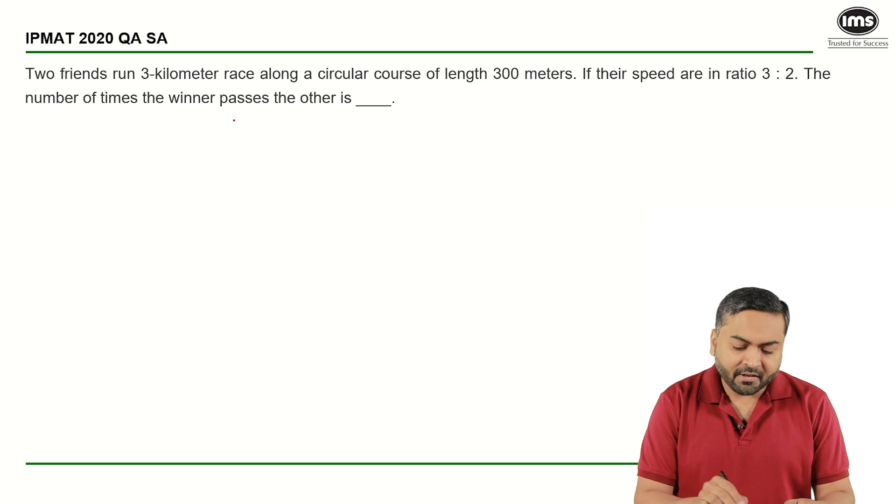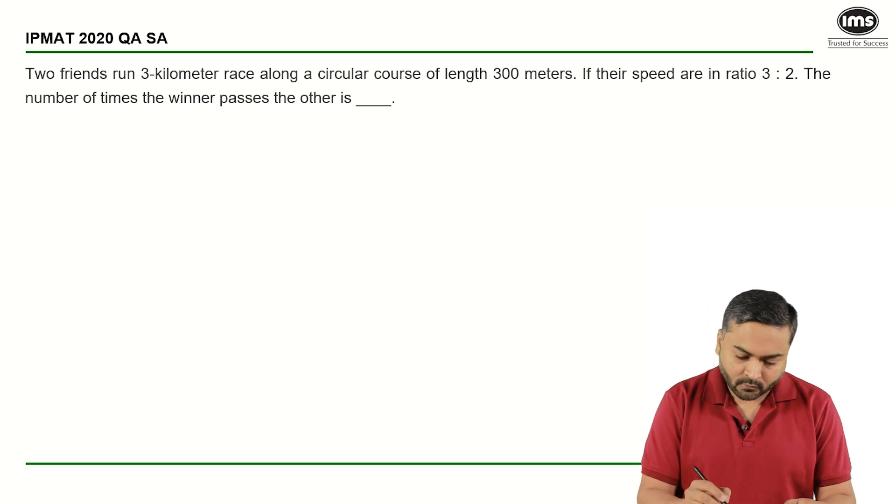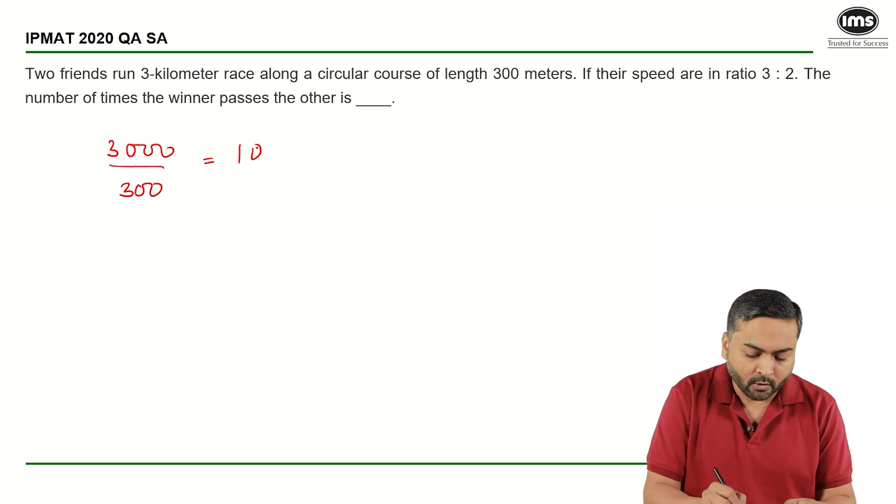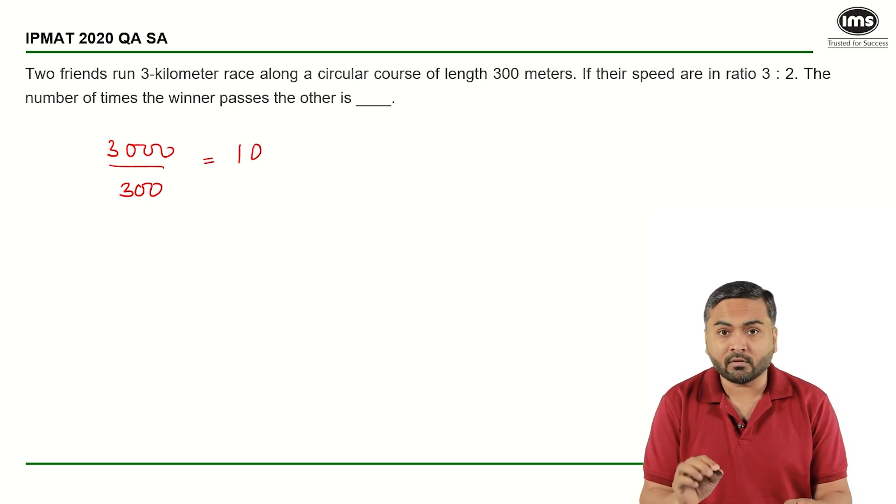So let us start. It is given a 3 kilometer race and the length is 300 meters. So basically anyone who wants to complete the race has to go around the circular track 10 times.